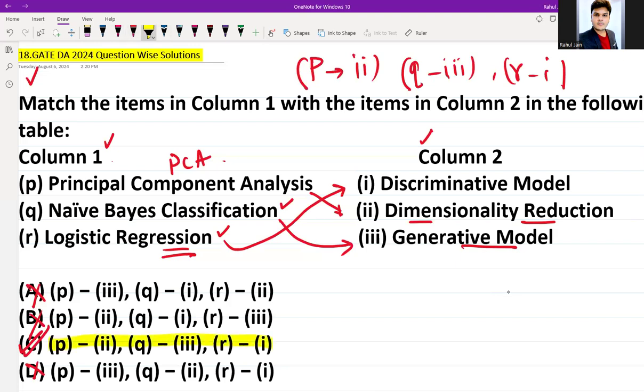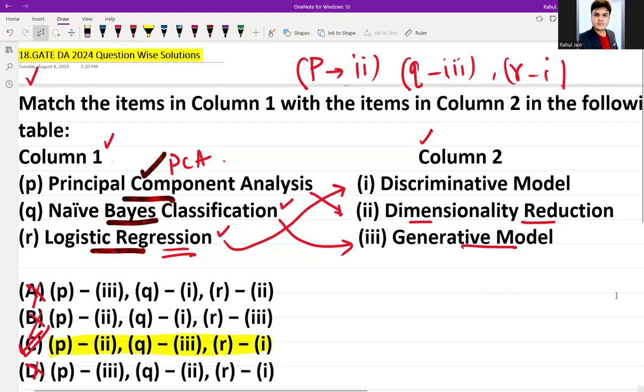Easy level question. Still, I hope the concept is clear. Again, let me revise: PCA for dimensionality reduction problem, Naive Bayes classification is generative model, and Logistic Regression is discriminative model. Thank you so much.